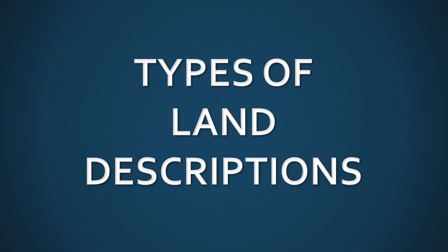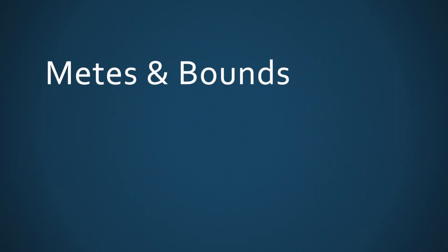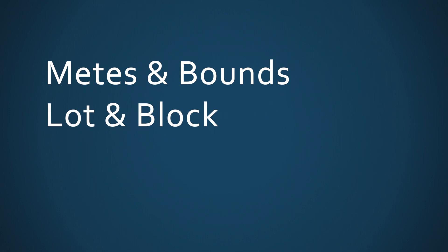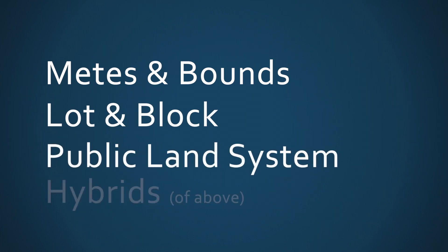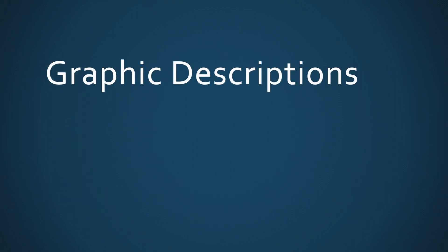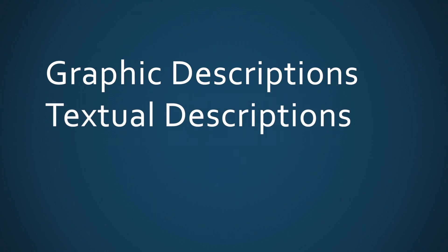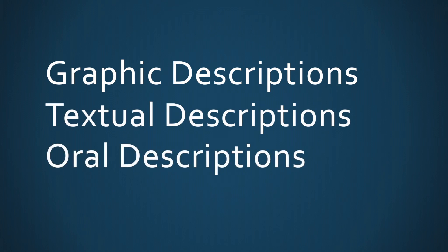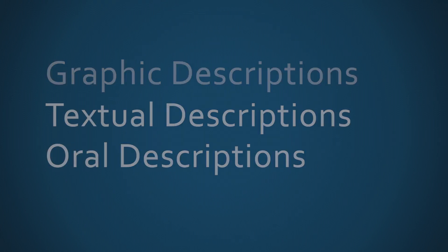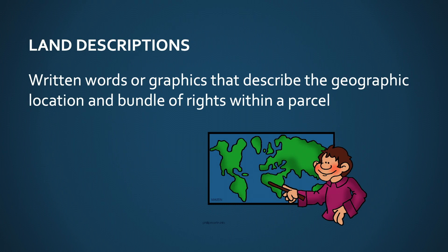There are all kinds of descriptions available to us. We've got metes and bounds, lot and block, public land system, hybrids of any two of those three choices. They can come in different forms — graphic descriptions, textual descriptions, oral descriptions in some cases. Land descriptions are written words or graphics that describe the geographic location and bundle of rights within the parcel.